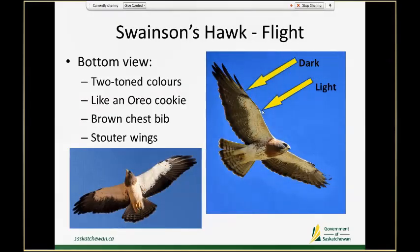In flight, Swainson's hawks are thankfully very distinctive — they also have two-toned wings, but opposite of what you would see in a dark morph Ferruginous hawk. On Swainson's they have an Oreo cookie coloration, as I like to refer to it: two-toned where the inner feathers are light and their outer feathers are dark, and this contrast can be seen from even quite a distance.